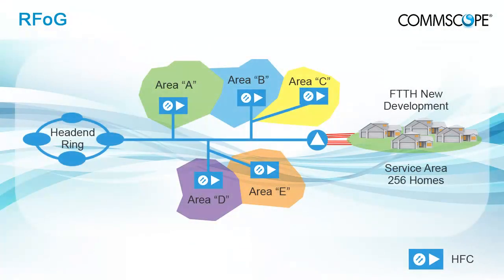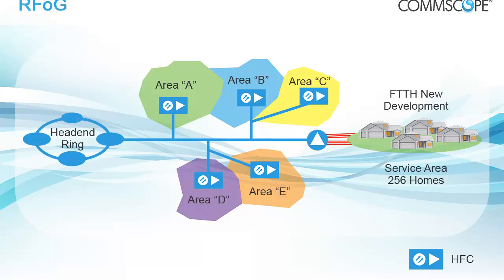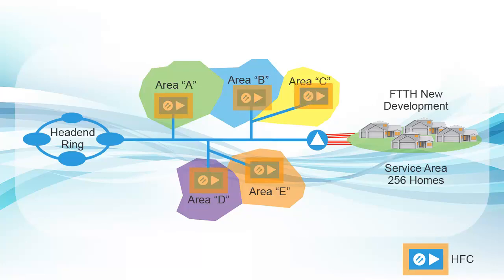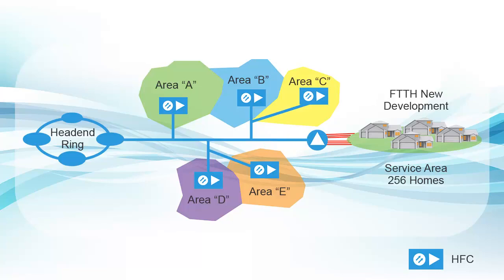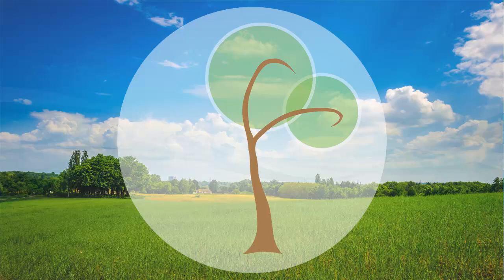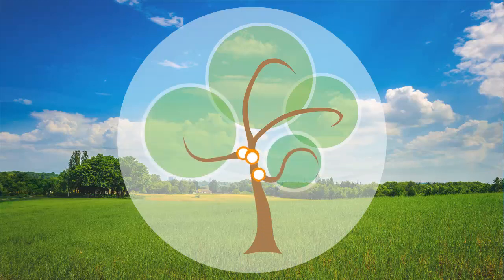For this reason, the cable industry developed new standards for RF over glass, or RFOG, which leverage existing HFC investment while providing a path to fiber to the subscriber. An RFOG architecture builds upon the HFC infrastructure and thus allows existing areas served by HFC to continue with that architecture, while new construction extends fiber beyond the node to the customer's premises. This changes the economics of fiber access from complete system rebuild to growth and additions.